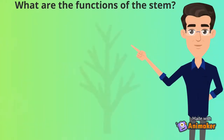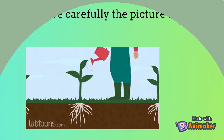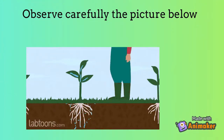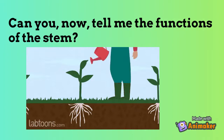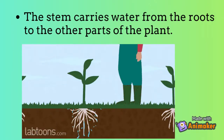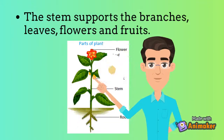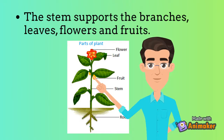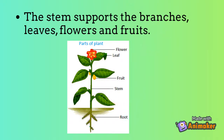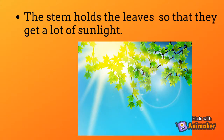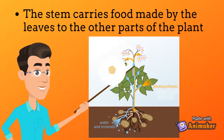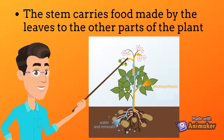What are the functions of the stem? Observe carefully the picture below. Can you now tell me the functions of the stem? The stem carries water from the roots to the other parts of the plant. The stem supports the branches, leaves, flowers and fruits. The stem holds the leaves so that they get a lot of sunlight. The stem also carries food made by the leaves to the other parts of the plant.